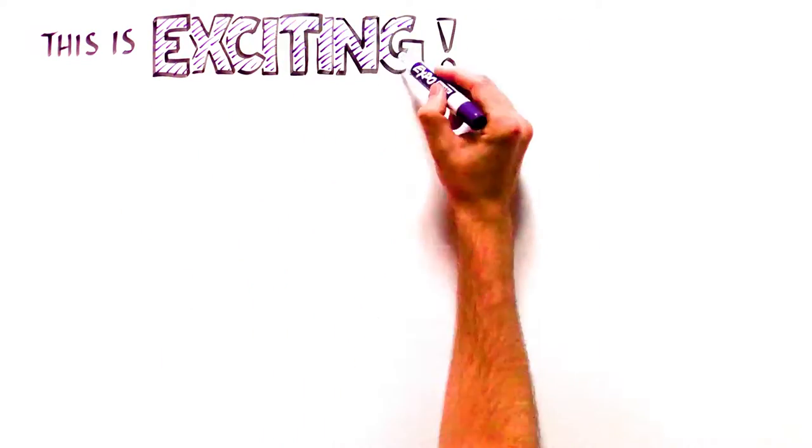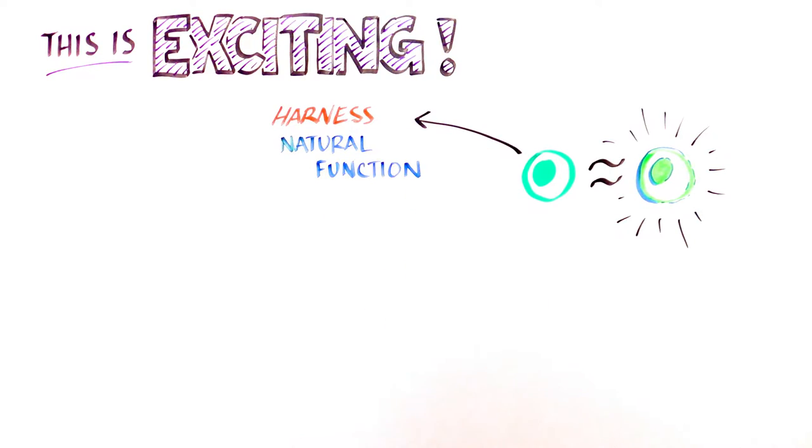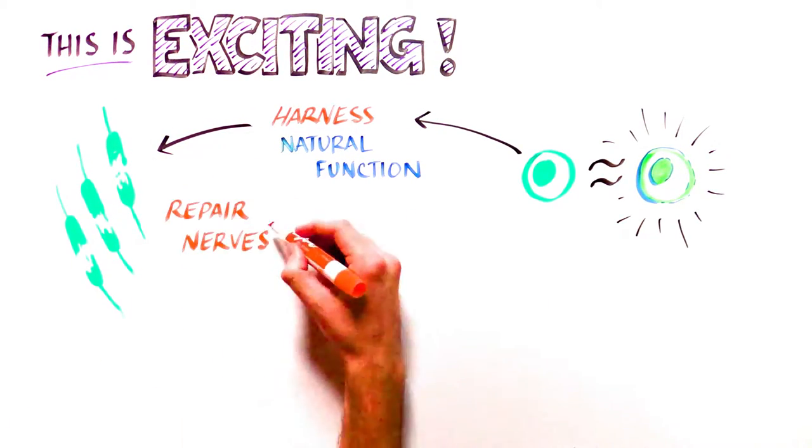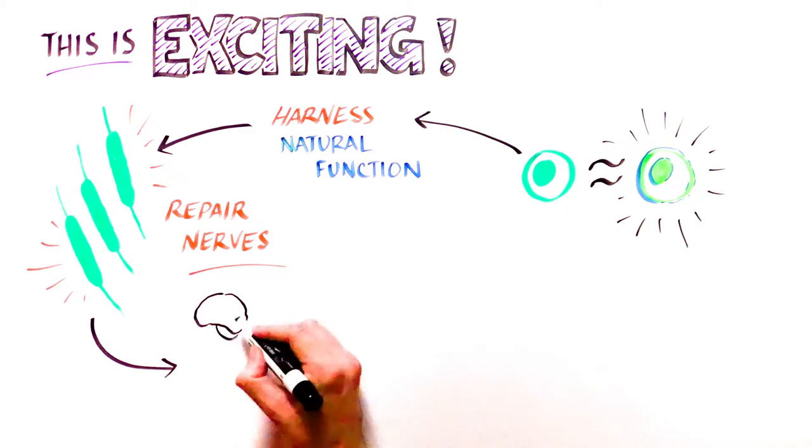This therapy is exciting because it utilizes a type of cell similar to one naturally found in the body and harnesses its natural function to re-insulate and repair the nerves damaged in spinal cord injury.